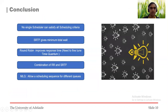In conclusion, no single scheduler can satisfy all scheduling criteria. On one hand, SRTF gives minimum total wait time. On the other hand, round-robin can improve response time. So we have used a combination of both. By using a multi-level queue structure, we can allow different queues to schedule based on their priority. This is the end of my presentation. Thank you for your time.